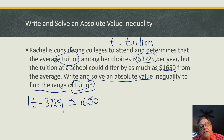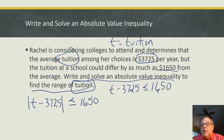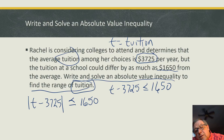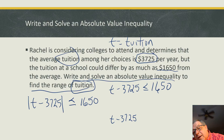Case one: t − 3725 ≤ 1650. Case two: t − 3725 ≥ −1650. When setting up the second case for an absolute value inequality, we reverse or flip the inequality symbol from less than or equal to, to greater than or equal to, and we take the 1,650 and make it negative.